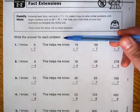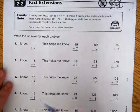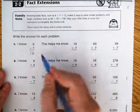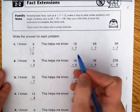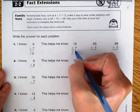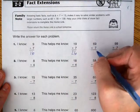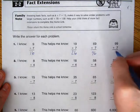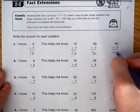Write the answer for each problem. I know that 9 plus 7 equals 16. This helps me know that 19 plus 7 equals 26, 69 plus 7 equals 76, and 99 plus 7 equals 106.